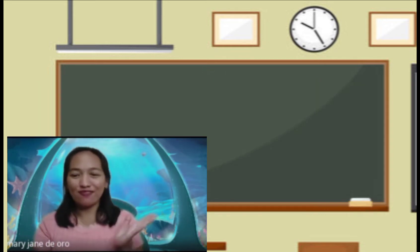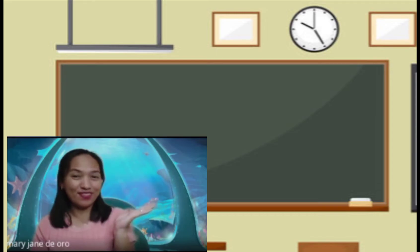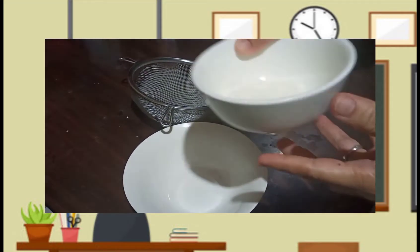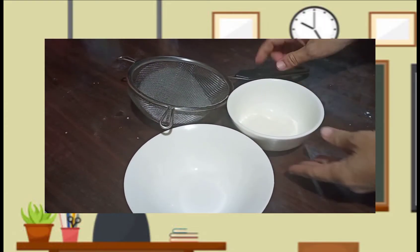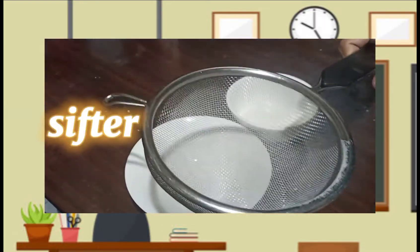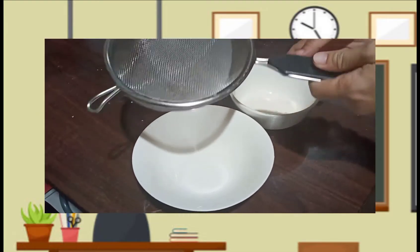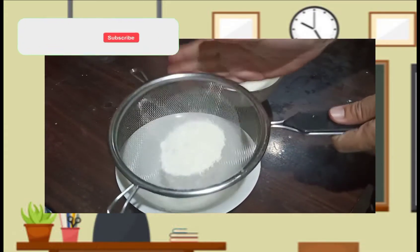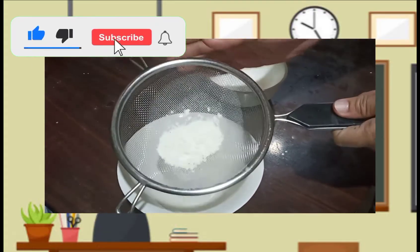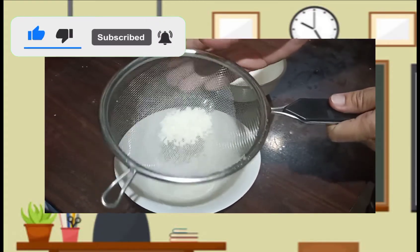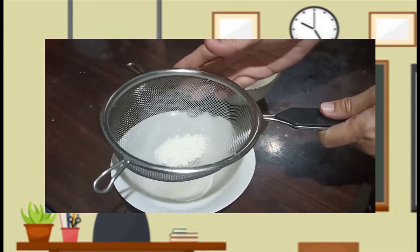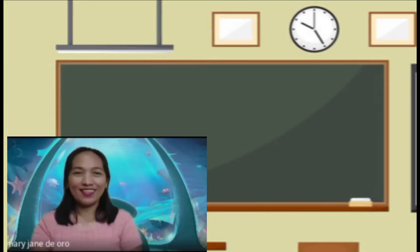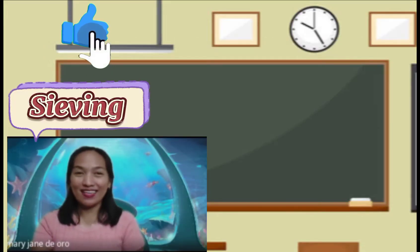Next, we have this video. This is a mixture of flour with hard particles. So we are going to use the sifter to separate the mixture. Using the sifter, we can separate the hard particles from the mixture. And this is what we call sieving.